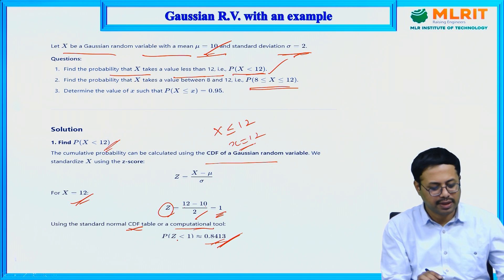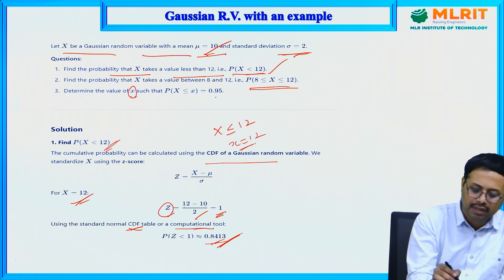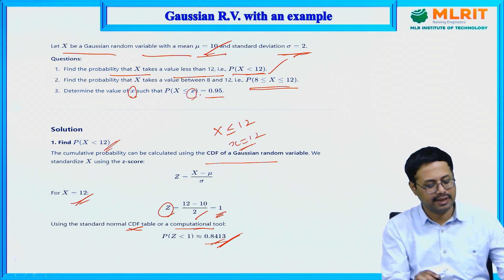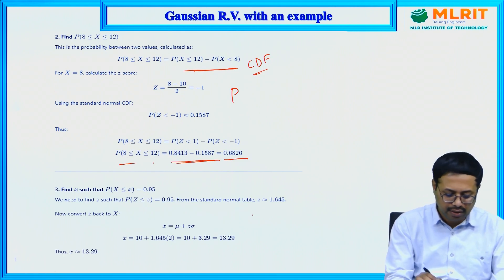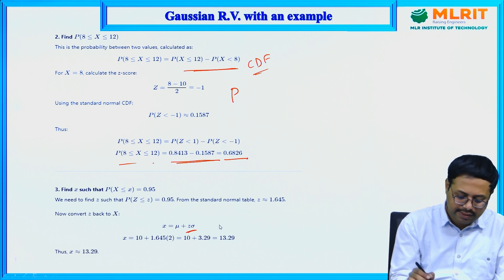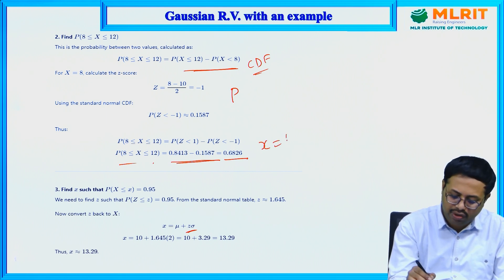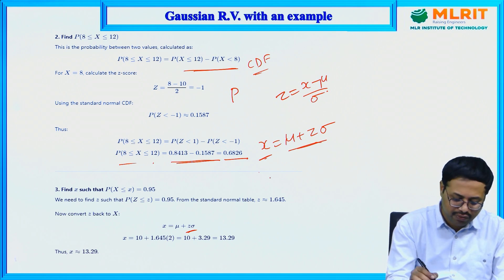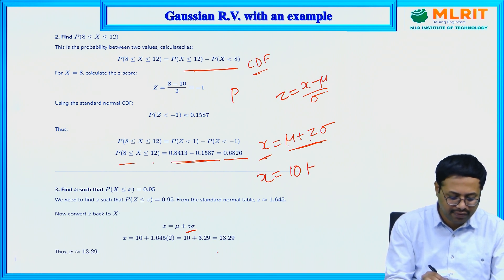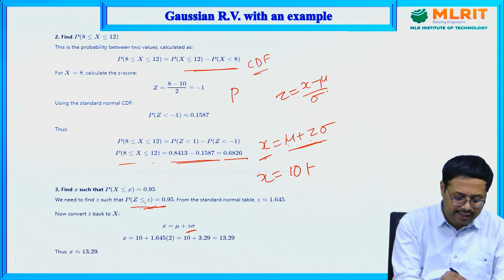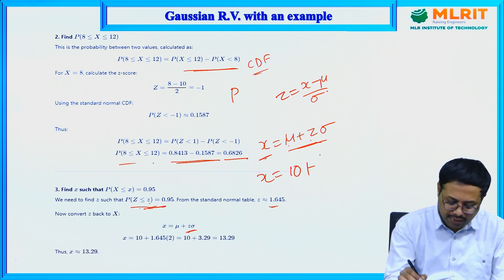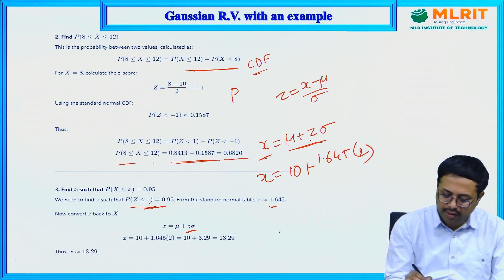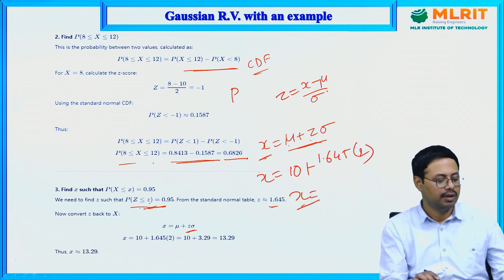For the third question, determine the value of x given a certain probability. Since z is symmetric on both sides, x = μ + z·σ. With μ = 10, σ = 2, and z = 1.645 (from the standard table), substituting gives x = 10 + 1.645 × 2 = 13.29. This is how you calculate x from a given probability using the standardized Gaussian variable.